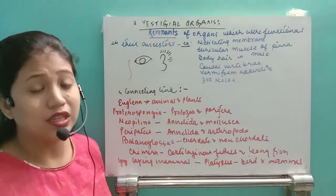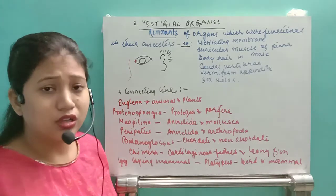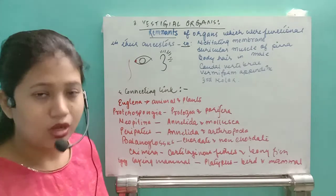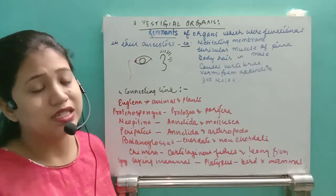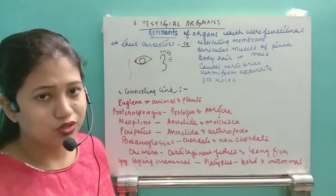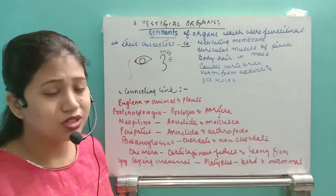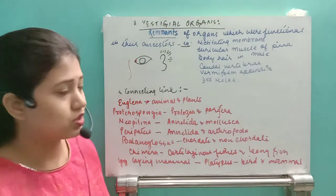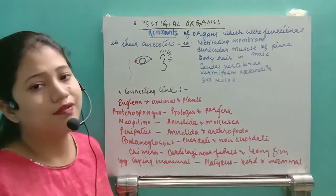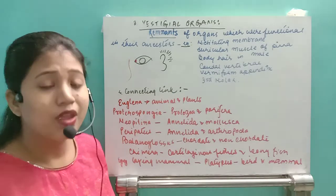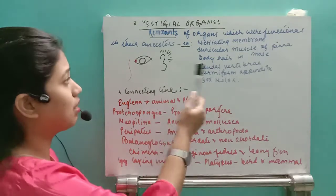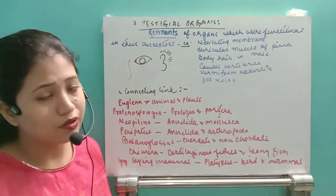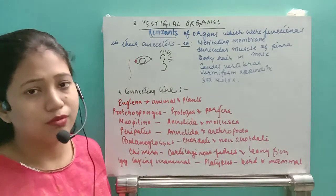The next vestigial organ is the third molar. The third molar is not functional, and many people do not grow it at all. Some people have 28 teeth throughout their life while others have 32 teeth. So the third molar is also a vestigial organ. In summary, vestigial organs are remnants of organs which were functional in ancestors but are present in current organisms without performing a proper function.